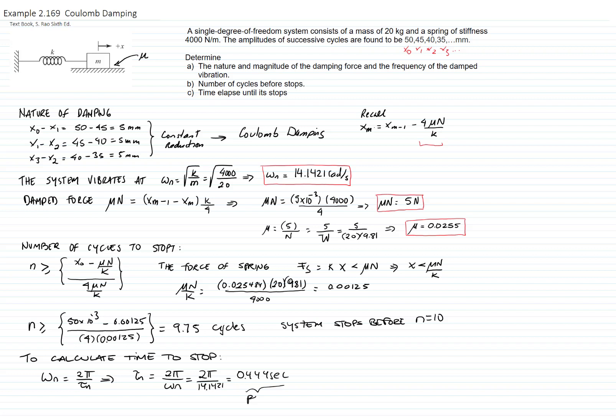So the time to complete the motion or to stop will be the time of each cycle multiplied by 9.75. The system requires then 4.33 seconds to come to a complete stop.